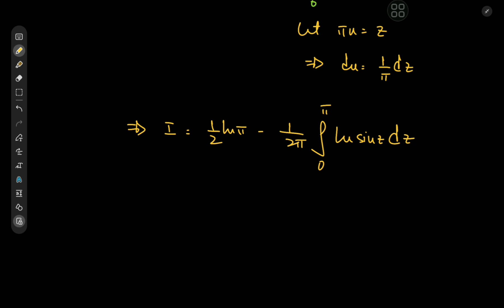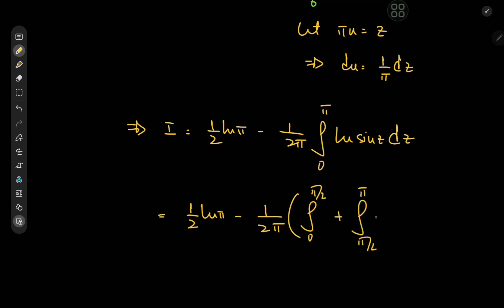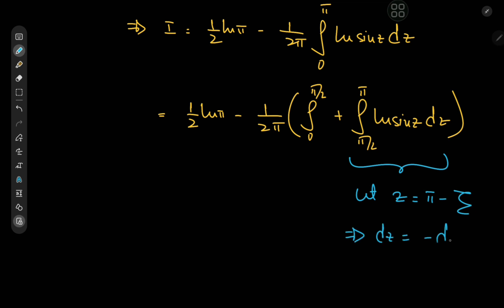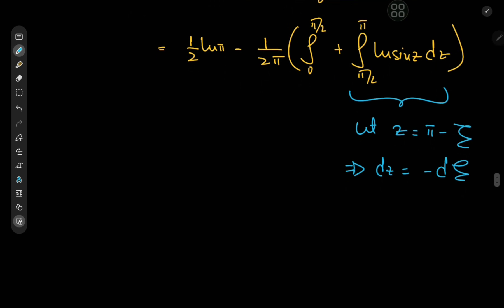Let's play around a bit more with symmetry. We have I = ½ log π − (1/2π) [∫₀^(π/2) log sin(z) dz + ∫_(π/2)^π log sin(z) dz]. For the second piece, we let z = π − ζ, so dz = −dζ. The lower limit becomes π/2 and the upper limit becomes 0, with the integrand becoming log sin(ζ).